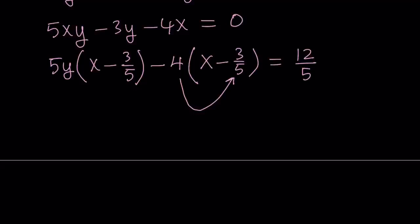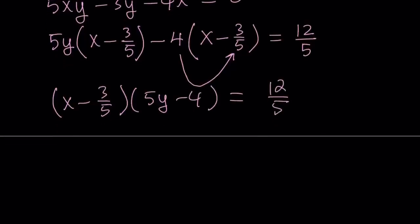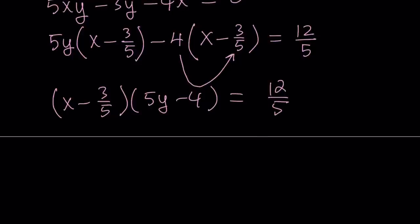Now, we are ready to factor. We can take out x minus 3 over 5 which is a common factor. The other factor is going to be 5y minus 4. But don't worry, we're going to take care of this. We're going to simplify this. Now, I have a fraction on both sides. So let's go ahead and multiply both sides by 5. That's going to help. And it's going to give us 5x minus 3 multiplied by 5y minus 4 equals 12. Awesome.